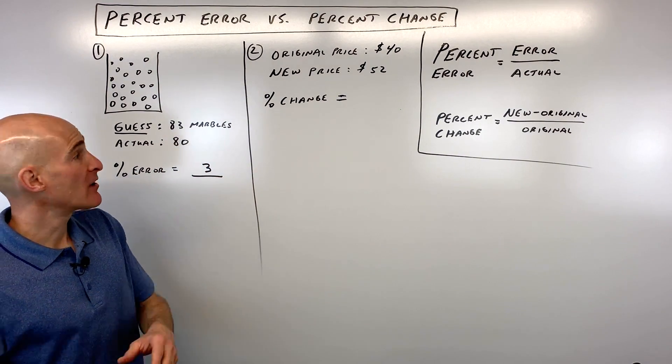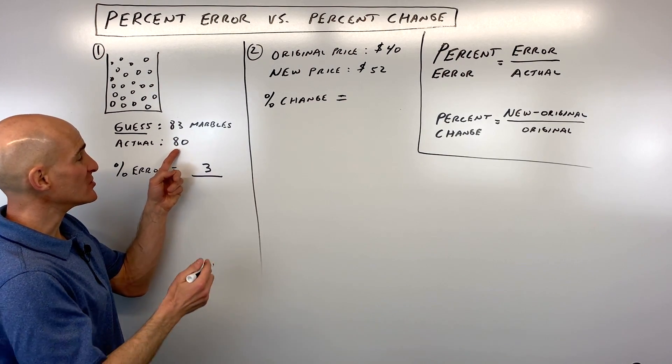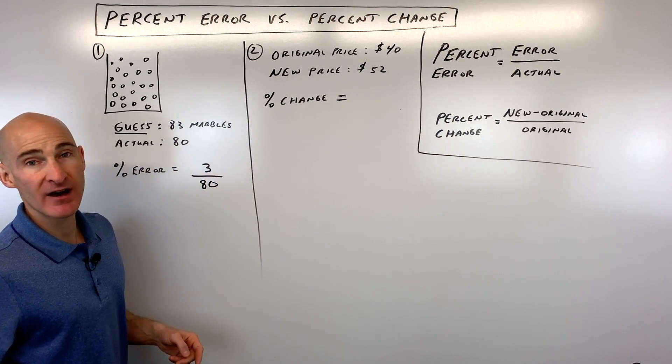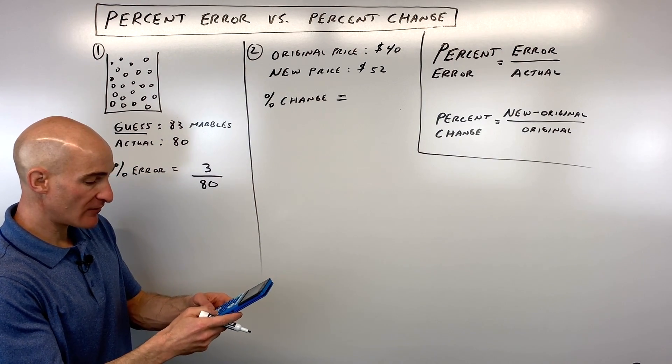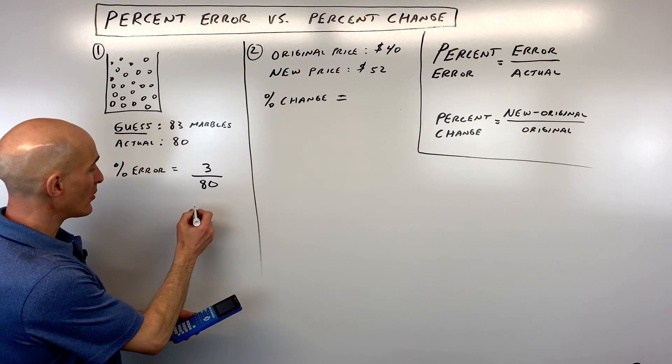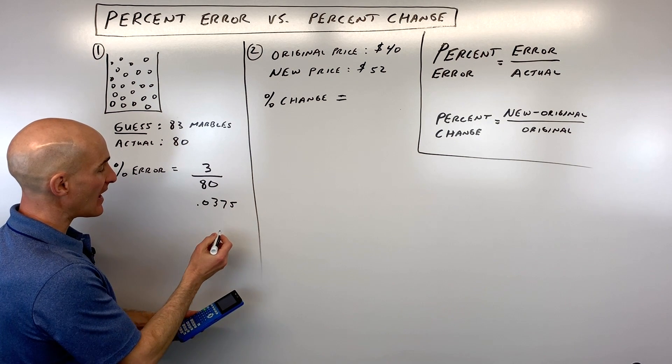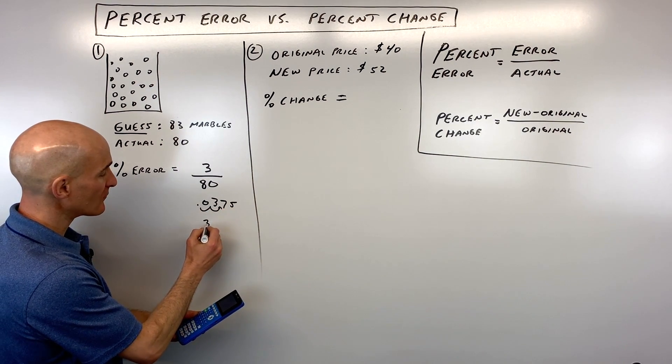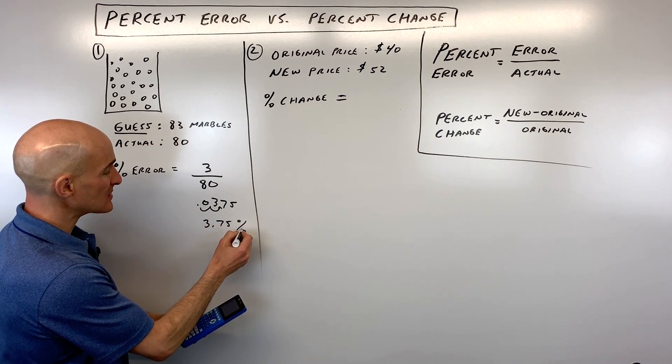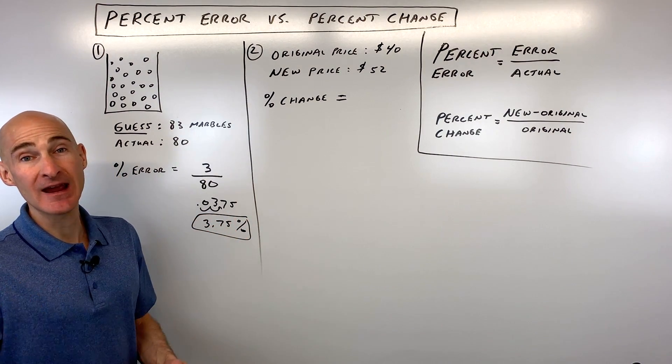Compared to what, though? Compared to how many there were actually in the jar. So it's going to be 3 divided by 80. Let's go to the calculator on that, see what that comes out to. So 3 divided by 80, which is 0.0375, and we want to just move that decimal place two places to the right to convert it to a percentage. So it's a 3.75% error.